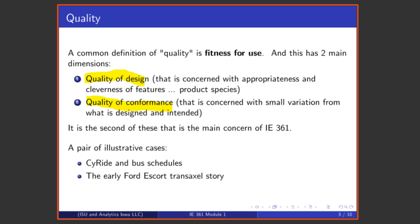Consider a pair of illustrative cases regarding quality of conformance. Let's think for a second about a city bus service and quality of conformance. What one wants from a bus service primarily is that the bus runs on schedule. That there is small variation from what is intended, what is planned, what is promised. So it's fairly obvious in this service context that quality of conformance is an important concept.